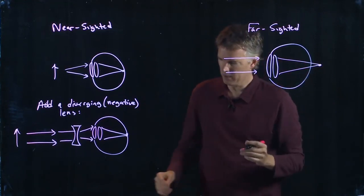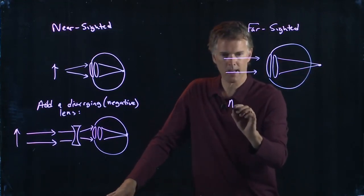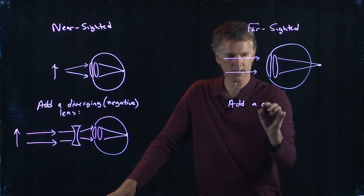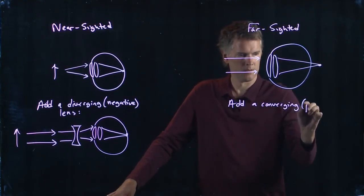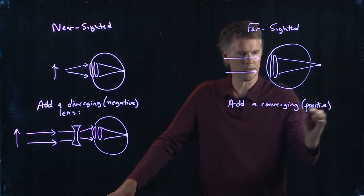So we need to get that focus in a little closer. And the way we get it in closer is we add a converging lens. And remember, converging is positive.